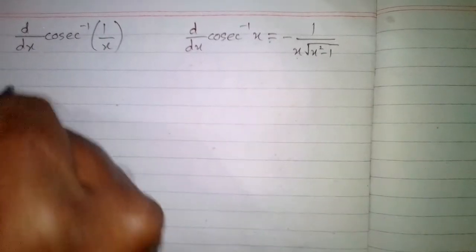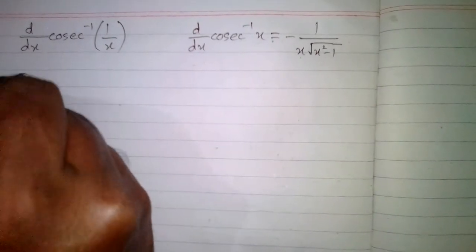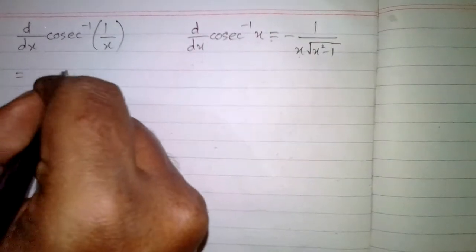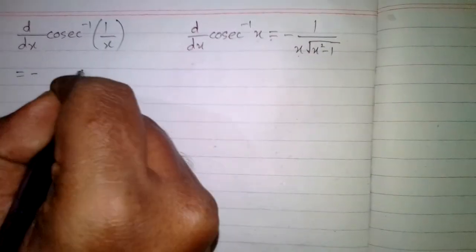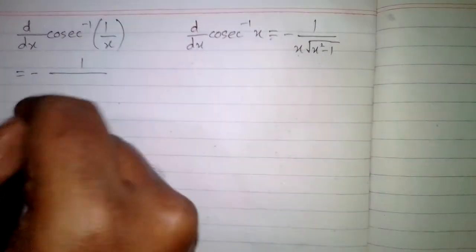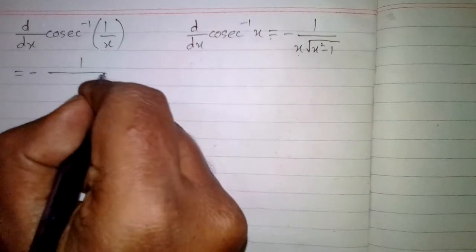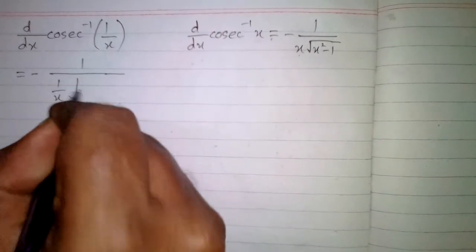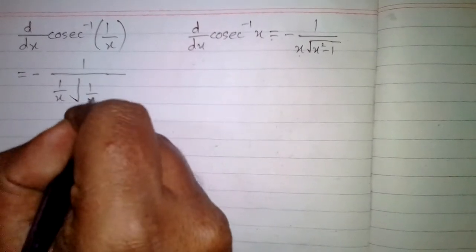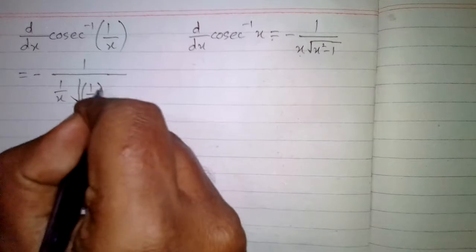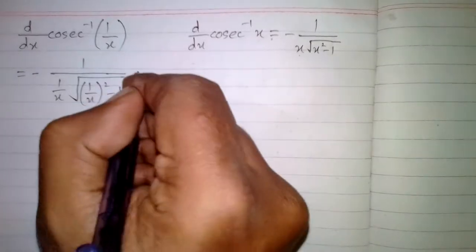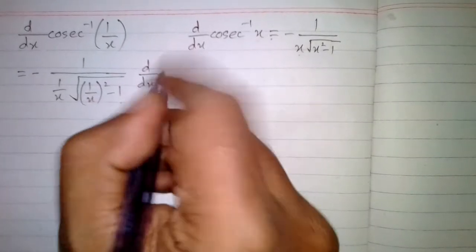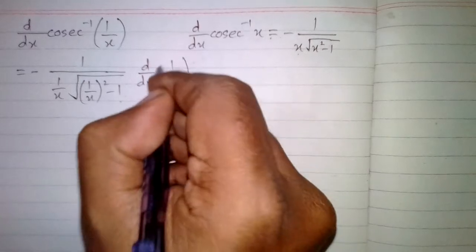So the derivative of cosine inverse of 1/x is −1 divided by (1/x) times the square root of (1/x)² − 1, multiplied by the derivative of 1/x.